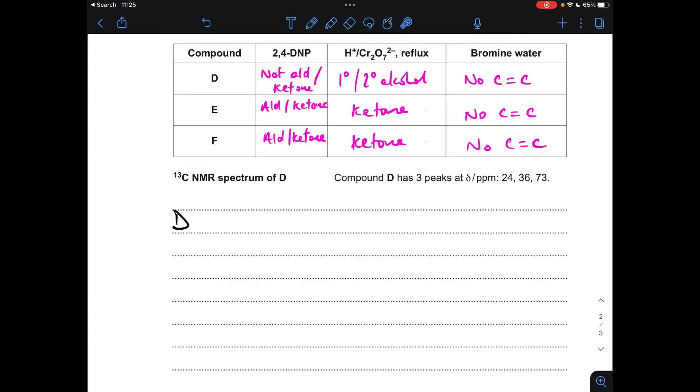So the next thing I want to do is get the structure for compound D sorted. So we've established it's not an aldehyde or a ketone. It could be a primary or secondary alcohol. It doesn't have a carbon-carbon double bond. And we've got this extra information. It's carbon-13 NMR spectrum showed three peaks at these shift values. Looking at the data sheet, we can see we've got two carbon-to-carbon environments, and we've got a carbon-to-oxygen environment, which is consistent with the fact that it's an alcohol.